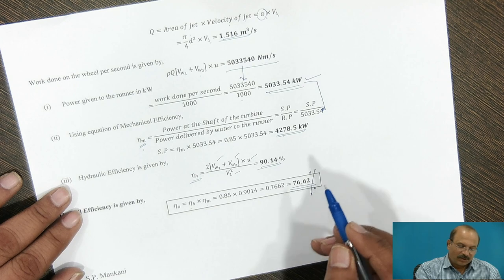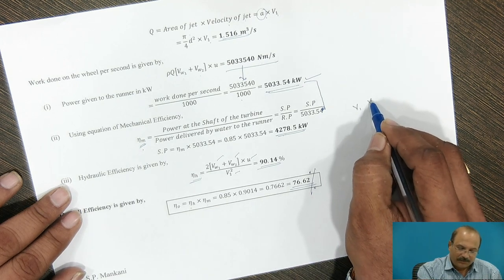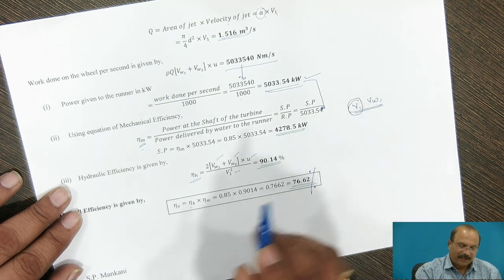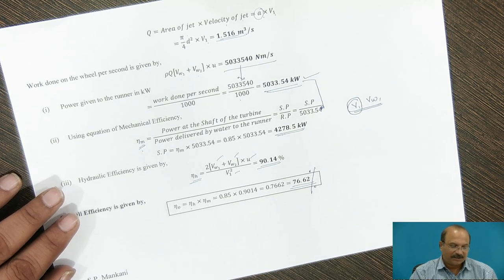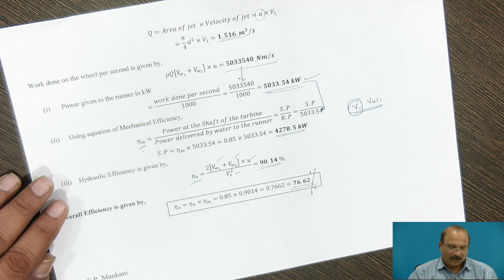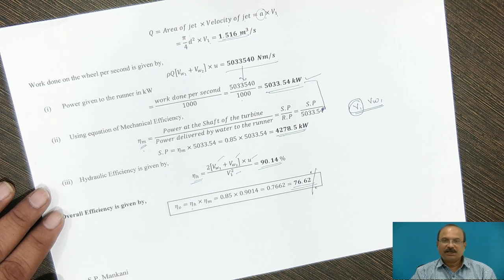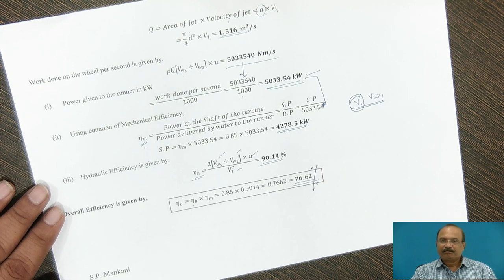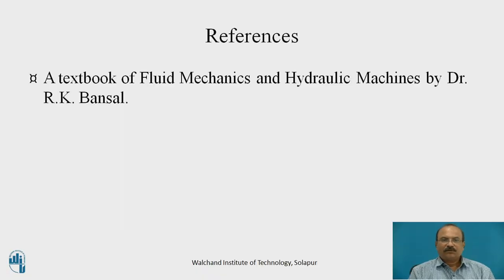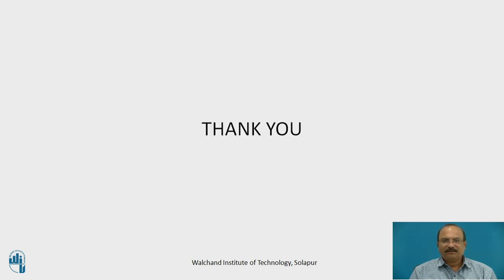To summarize: the key step is calculating V1 using the continuity equation and Bernoulli's equation together. Once V1 is known, all velocity components and efficiencies can be determined, leading to the overall efficiency of the Pelton wheel. For further reference, consult the textbook Fluid Mechanics and Hydraulic Machines by Dr. R.K. Bansal. Thank you.